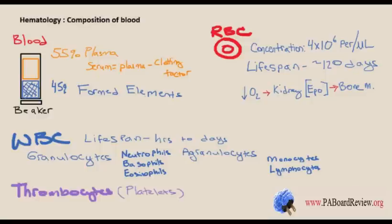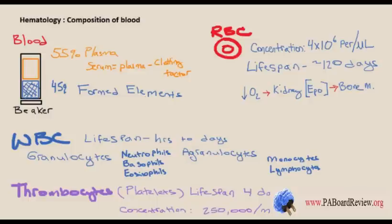Thrombocytes, which are platelets, have a lifespan of about four days, so they must be replenished quite frequently. Their concentration is 250,000 per cubic milliliter. As you think about these different components, you have to ask yourself what disease processes or pathophysiology can affect them. For example, DIC — disseminated intravascular coagulopathy — is where platelets and clotting factors cause embolisms throughout the whole system, but they eventually get used up, leaving you with severe bleeding because your body can't stay in balance.